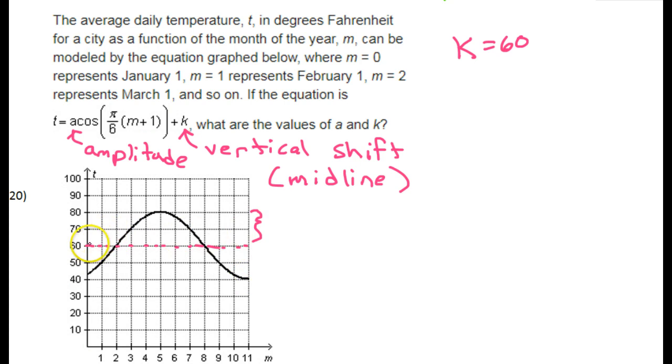And really, I just mentioned the amplitude just now, because the amplitude is how far you go above or below the midline. So remember when I said from 60 you go up 20 and you go down 20? Well, guess what? That's the amplitude. The amplitude is 20. So that means A would have to be 20.